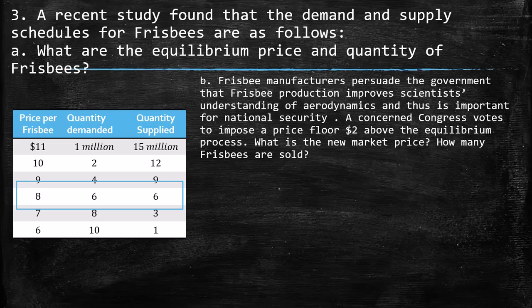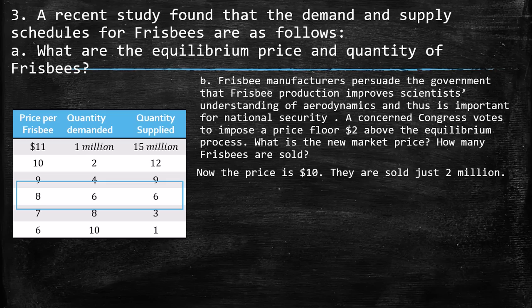Part B: Frisbee manufacturers persuade the government that Frisbee production improves scientists' understanding of aerodynamics and is important for national security. Congress votes to impose a price floor $2 above the equilibrium price. The equilibrium price was $8, so the new price floor is $10. At this price, only 2 million Frisbees are sold, because even though the quantity supplied is 12 million at the high price, consumers only have the willingness to buy 2 million.